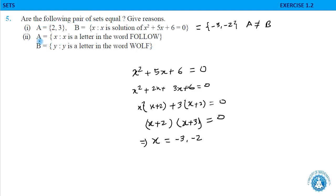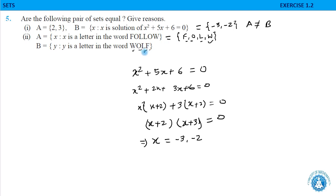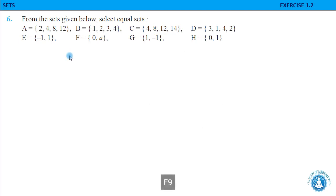Second part: A is the set of all letters in the word 'FOLLOW' — in roster form: {F, O, L, W}. Set B is the set of all letters in the word 'WOLF' — {W, O, L, F}. All elements present in A are also present in B, so A is equal to B.